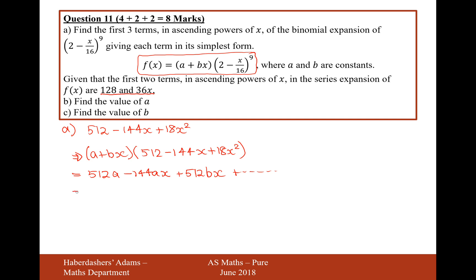So now this is going to be compared with 128x plus 36, sorry, just 128, and then plus 36x. So therefore, if I now make an equation out of these two parts here, 512 A equals 128, divide by your 512, and you get A is a quarter.